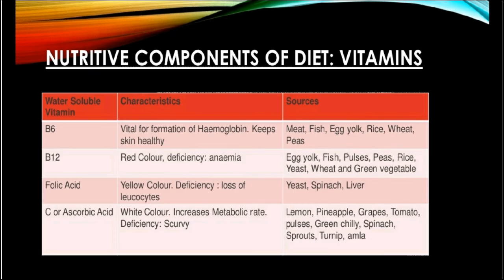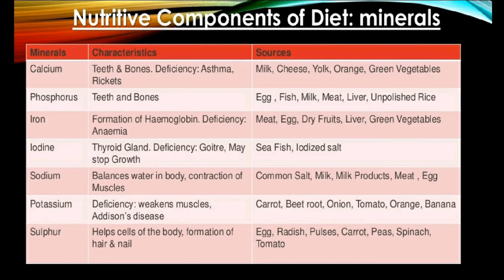The next vitamin is vitamin C. As we have previously studied about vitamin C, we won't be discussing it in detail. Further, we will go to the next point, which is minerals. Minerals are very important nutritive components of food. They are helpful for health and general development of the body, for the proper functioning of muscles, formation of teeth, clotting of blood, and in maintaining the balance of acid and base in the body. Various types of minerals include calcium, phosphorus, iron, iodine, sodium, potassium and sulfur.